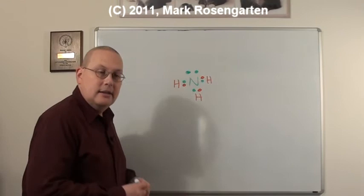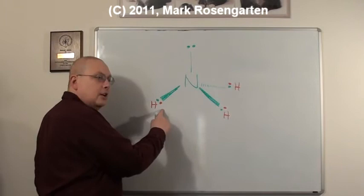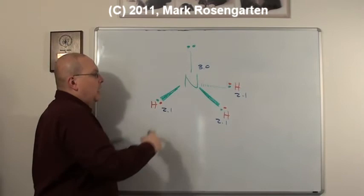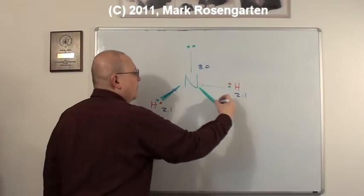Okay, here's a structure of this pyramidal molecule once more. Here, hydrogen has an electronegativity of 2.1. And nitrogen has an electronegativity of 3.0. So in each of these bonds, the electrons from the hydrogen are being pulled more towards the nitrogen side of the molecule.